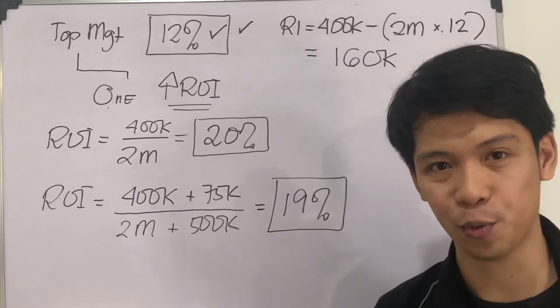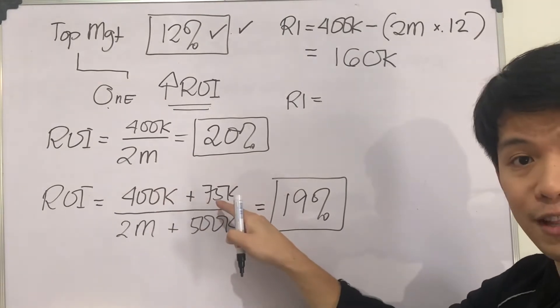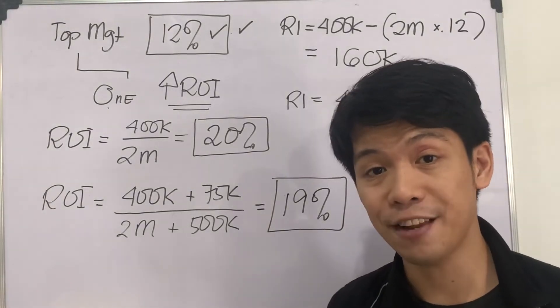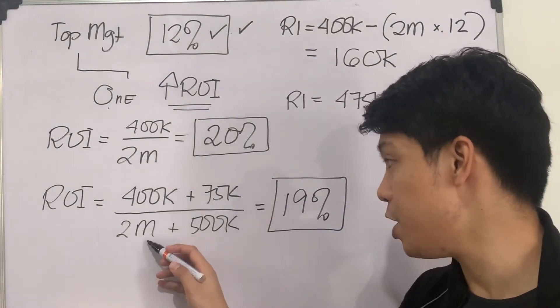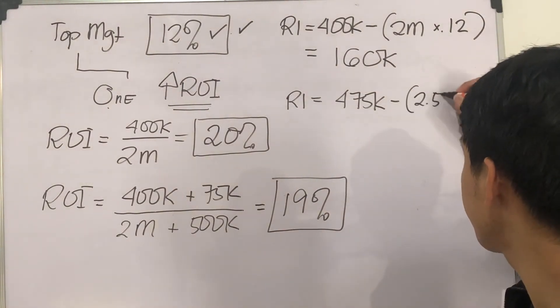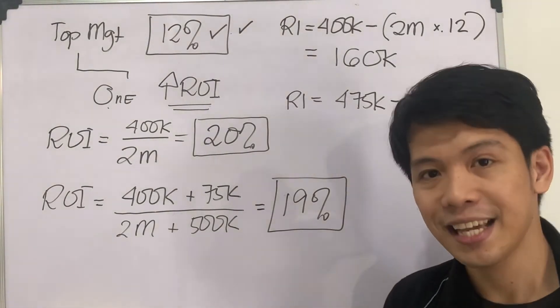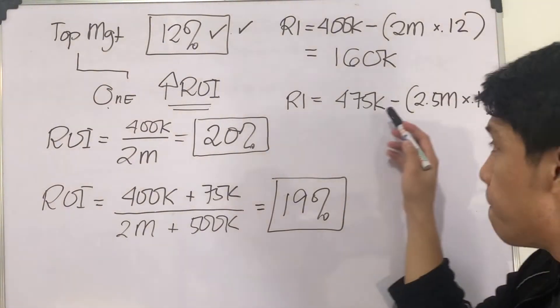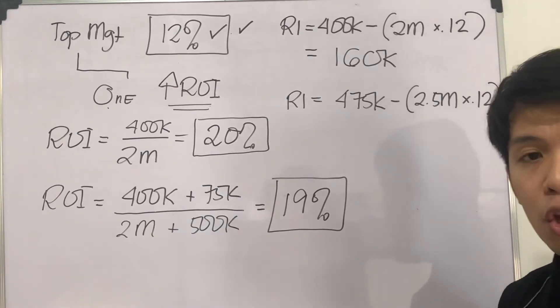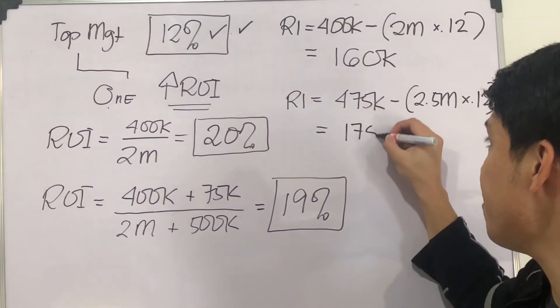What if we are going to take the project, what would happen to our residual income? RI, this is equal to $400,000 plus $75,000, which is $475,000. Our new total investment would be $2 million plus $500,000, which is a total of $2.5 million with a minimum rate of return of 12%. Let's calculate. $475,000 minus the product of $2.5 million and 12%, you're going to have a residual income of $175,000.